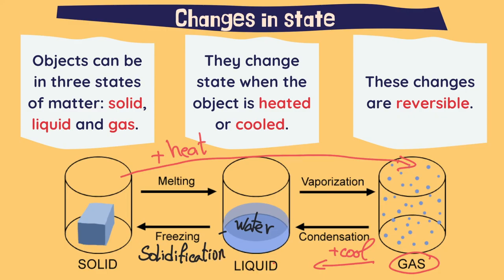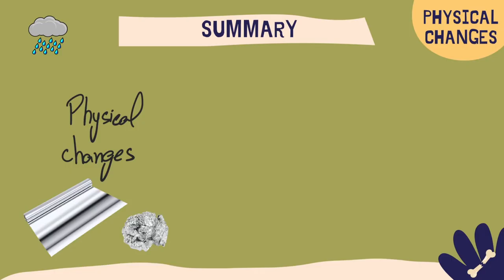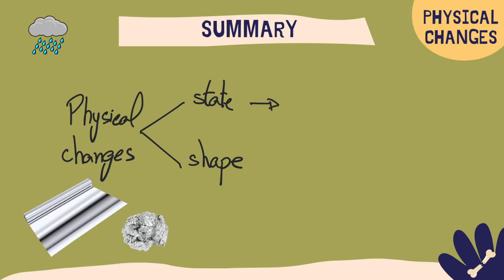Those are the three states of matter and the changes that we can have. Summarizing, we have that physical changes can be changes on state and changes on the shape of the object. These changes from liquid to gas or solid are usually reversible and the changes in shape are irreversible.